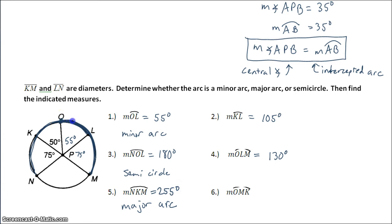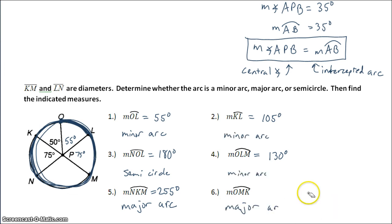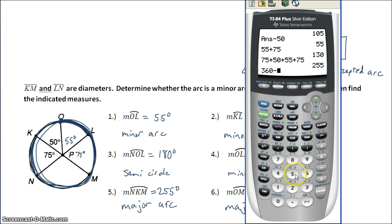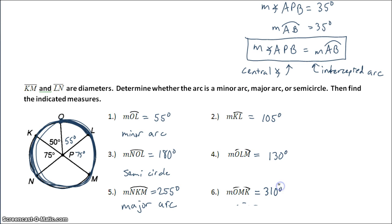Finally, arc OMK from O to M to K is going to be a major arc. It's almost an entire circle — it's 360 degrees minus this arc. So I take 360 degrees and subtract 50 to find that major arc: 360 minus 50 gives me 310 degrees.